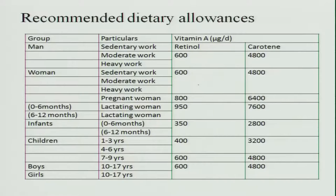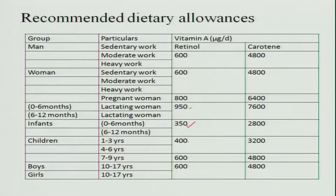You can convert retinol into beta carotene by multiplying by 8, giving 4800 micrograms. The same amount applies for children aged 7 to 17 years. For pregnant women there is an increase of 200 micrograms, for lactating women an increase of 350 micrograms, for infants it is 350 micrograms, and for children 1 to 3 years it is 400 micrograms of retinol.